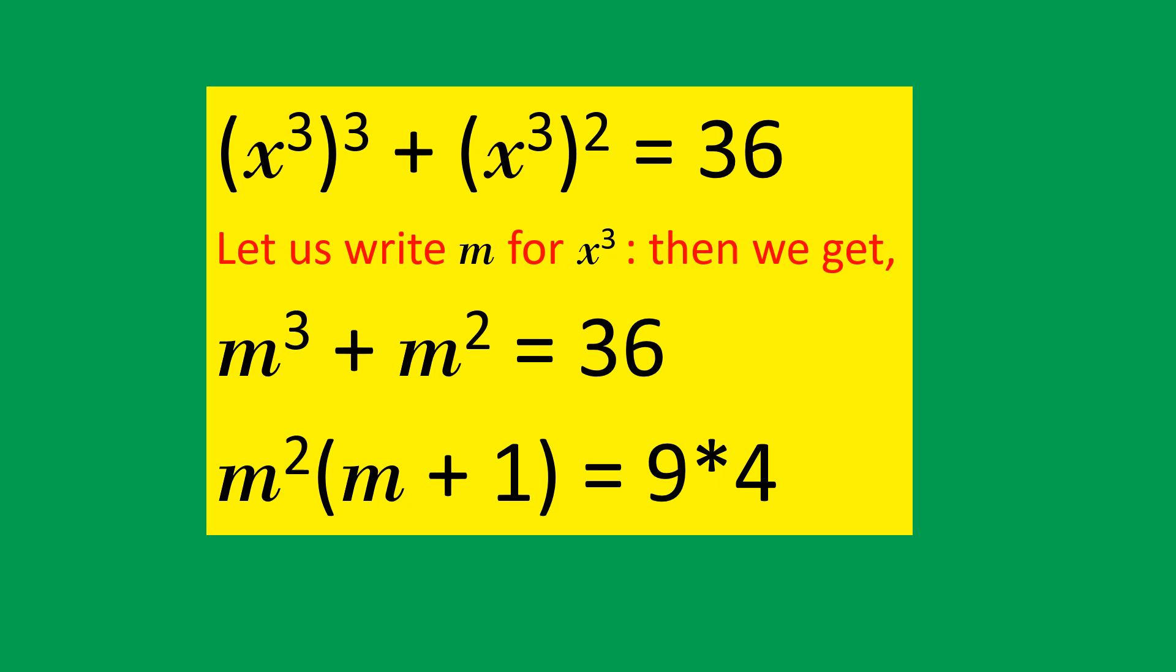Take out m square as common and we get a product of two factors: m power 2 into m plus 1. Break 36 into factors: 9 into 4.